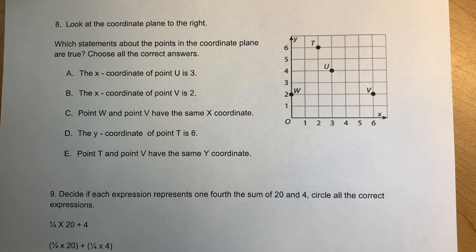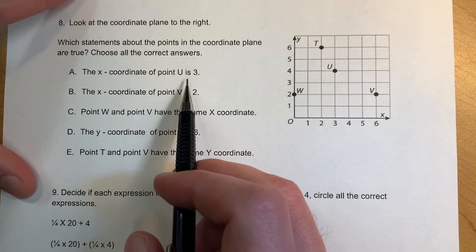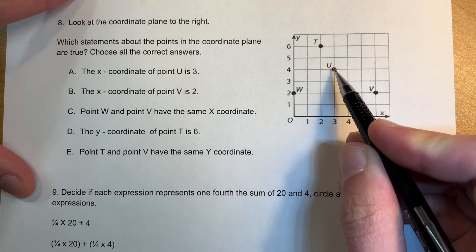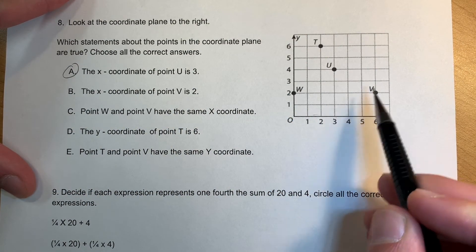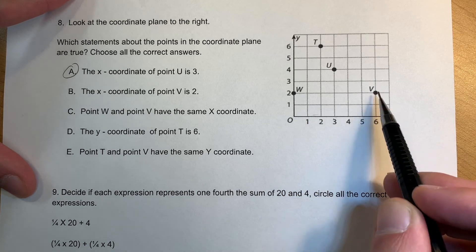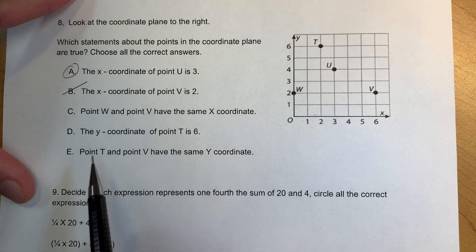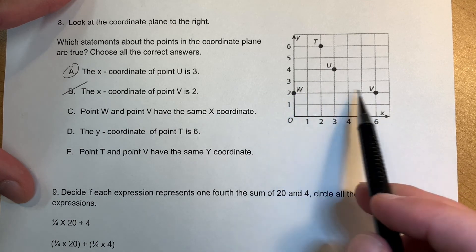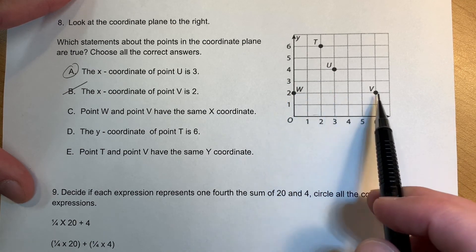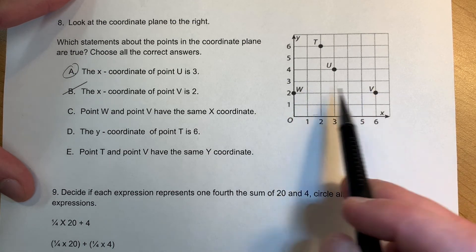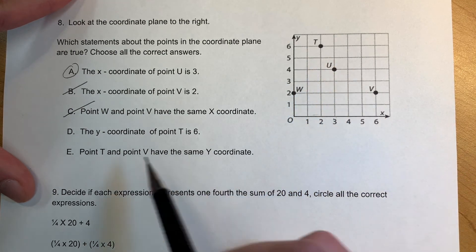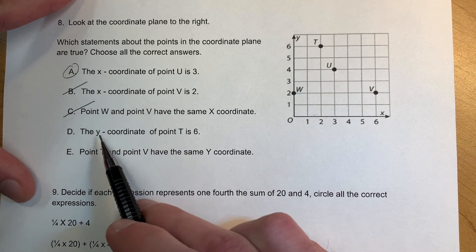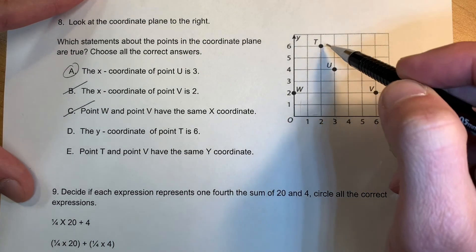Look at the coordinate plane to the right — circle all correct statements. The x-coordinate of U is 3 — that is correct. The x-coordinate of V would be 6, so the statement saying it's 2 is false. Points W and V have the same x-coordinate — that's a zero and a six, so that's false. They have the same y-coordinate of two, but not the same x-coordinate. The y-coordinate for point T is 6 — T is at (2,6), so that is correct.